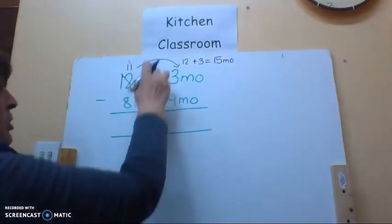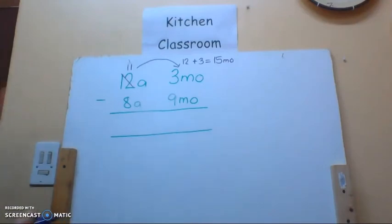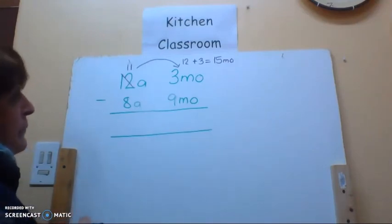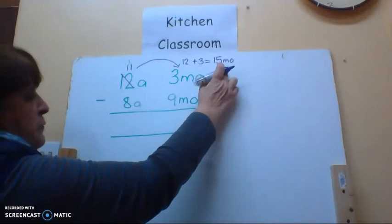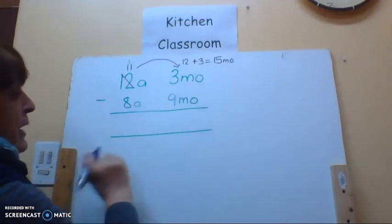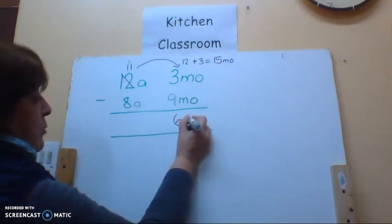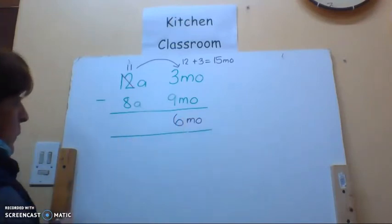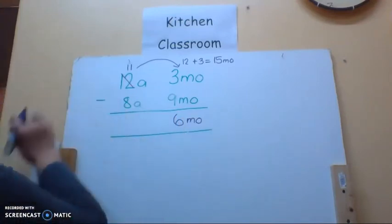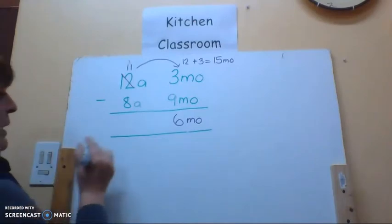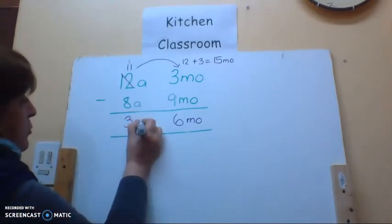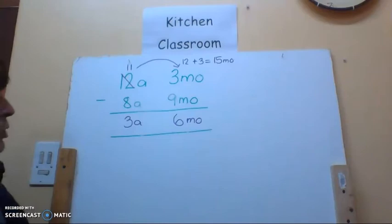I can't just put it and say borrow a 10 because there are not 10 months in a year. So now I can say 15 months minus nine months and that is going to leave me with six months. I'll go back here. 11 years minus eight years is going to leave me with three years. So if I've got 12 years and three months take away eight years and nine months that's going to leave me with three years and six months.